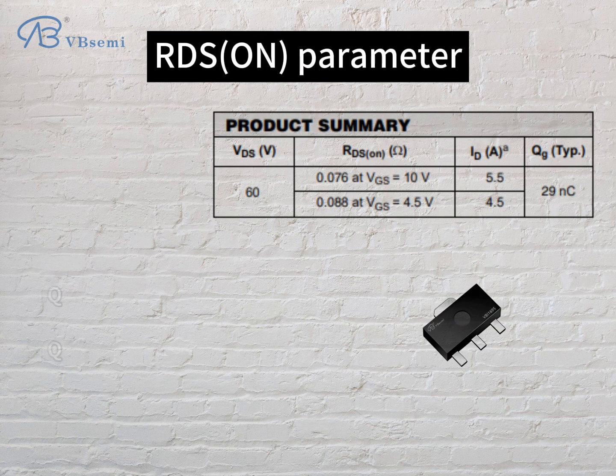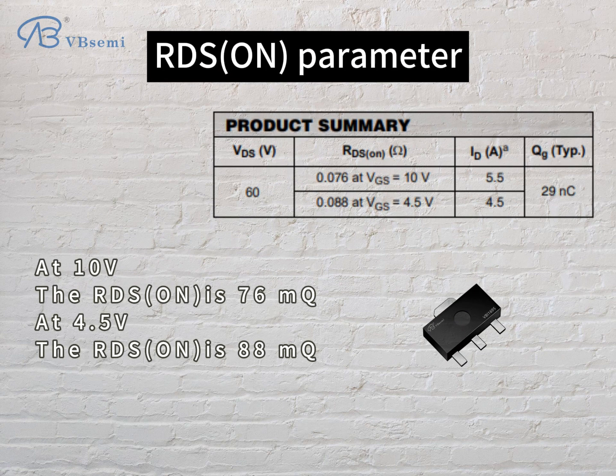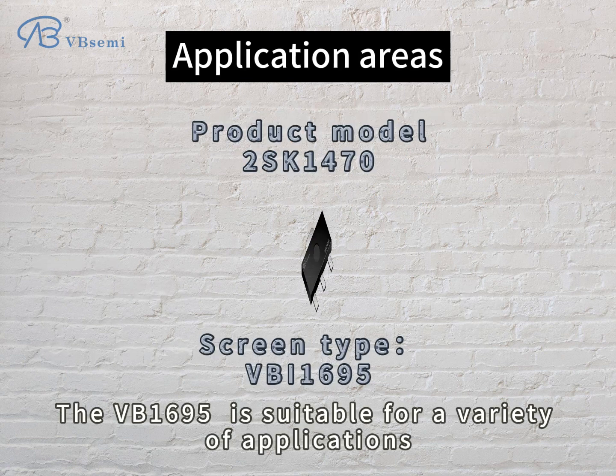RDS on parameter: at 10V, the RDS on is 76mΩ; at 4.5V, the RDS on is 88mΩ.